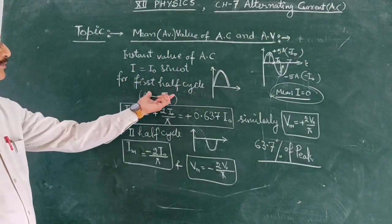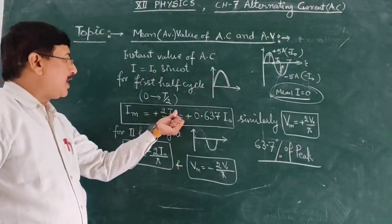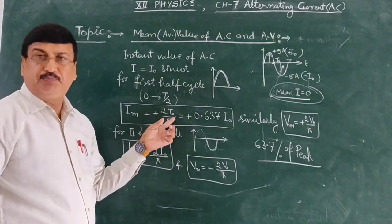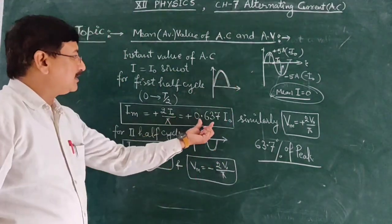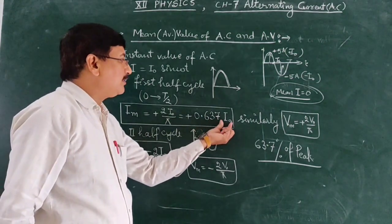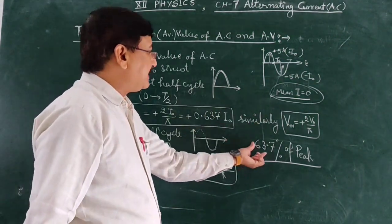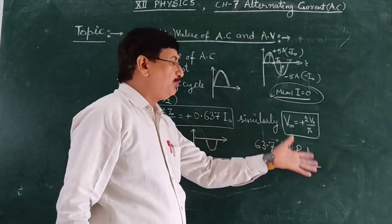Then half cycle, which means the positive, we want to compile the peak values. So this is 0.637. Approximately, we can say that 63.7% of peak value.